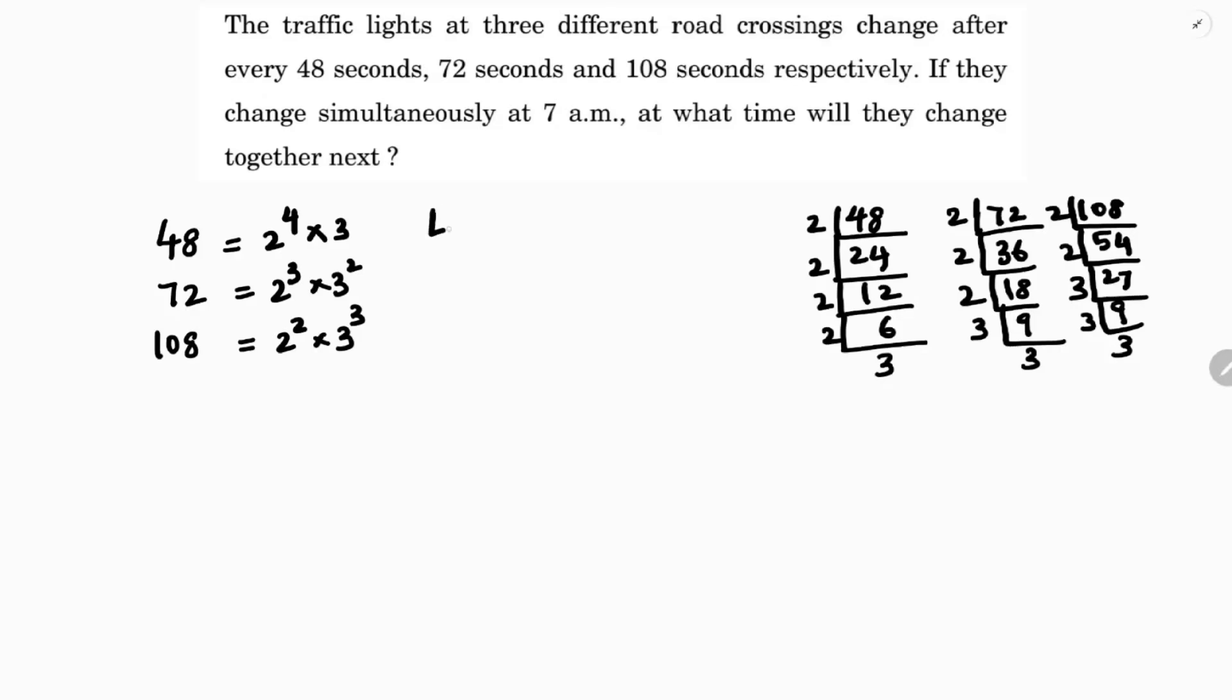See, LCM is the product of prime factors, all prime factors with highest power. So here, LCM is all prime factors - here are 2 and 3 - so the highest power is 2 to the power 4 into 3 to the power 3.